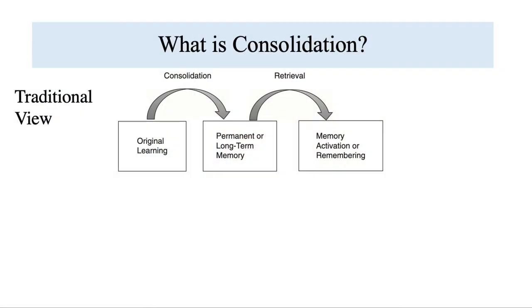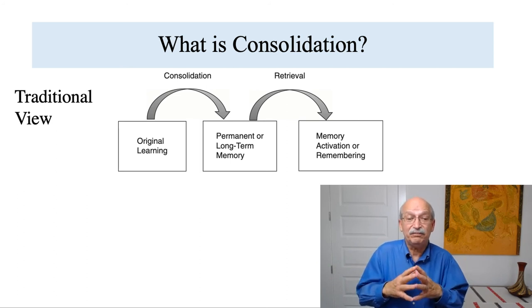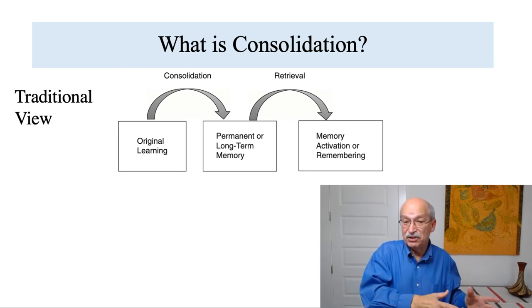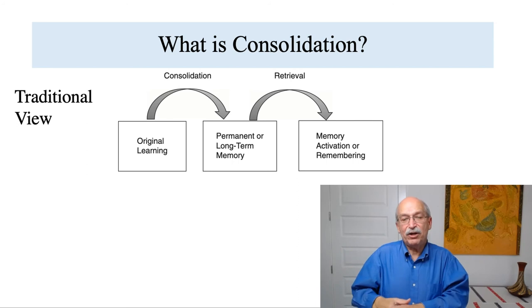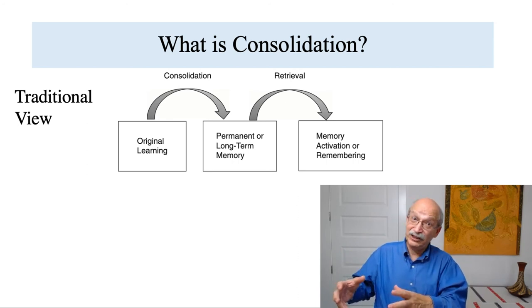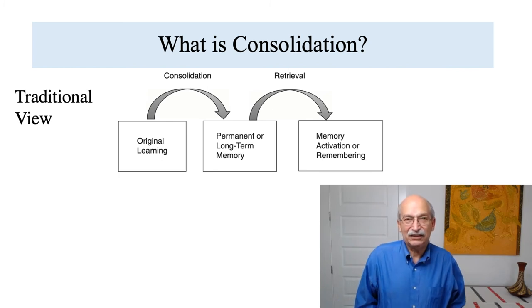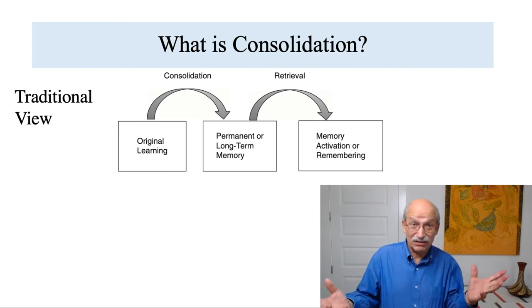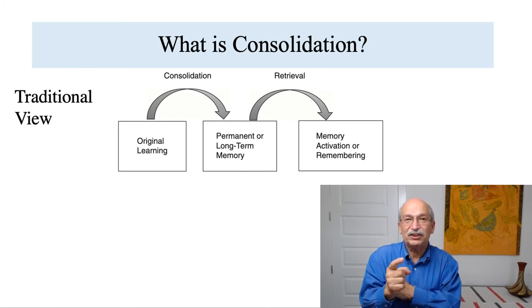The next slide shows you what's referred to as the traditional view of memory consolidation. The original learning and that acquisition has to be consolidated to create a permanent or long-term memory. And then when you want to use the memory, you undergo a retrieval process to return the memory to an active state. What's critical about this traditional conception of memory consolidation is that, according to this view, consolidation only occurs once.